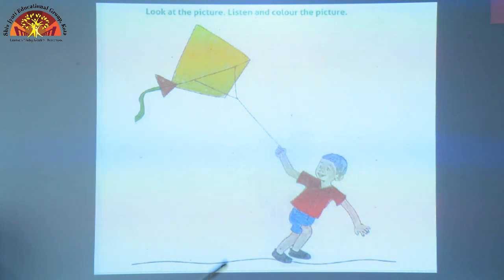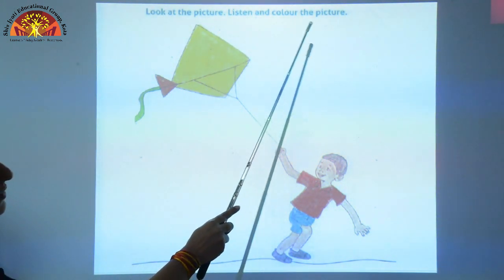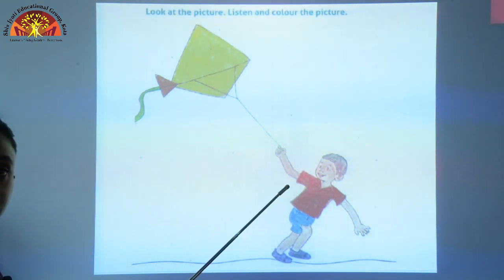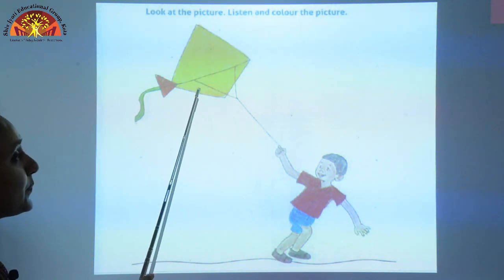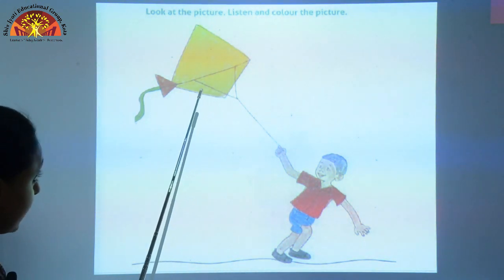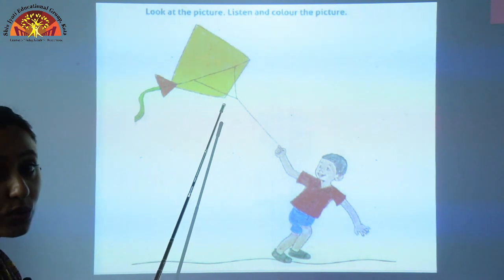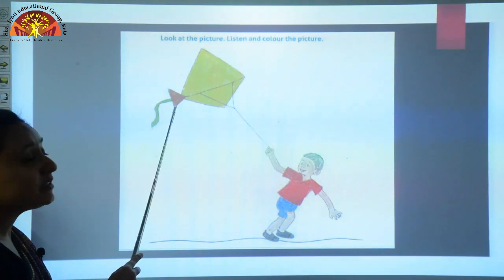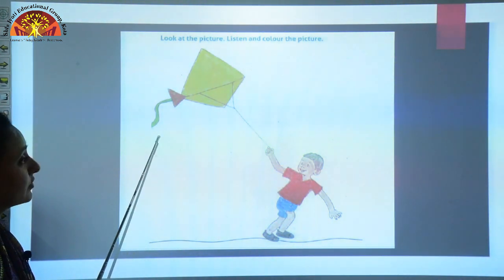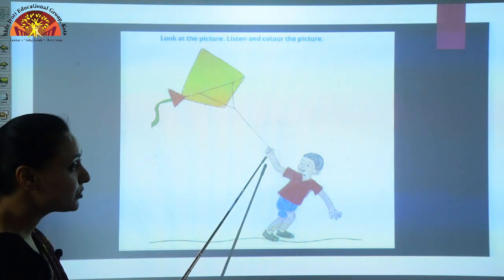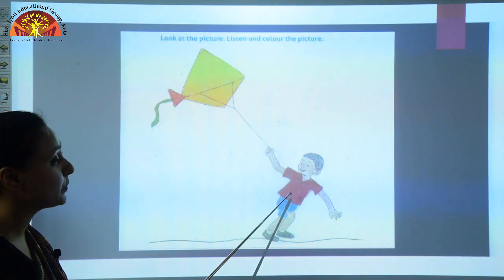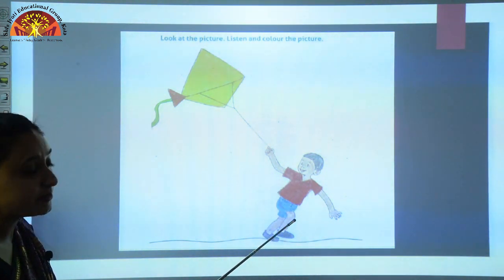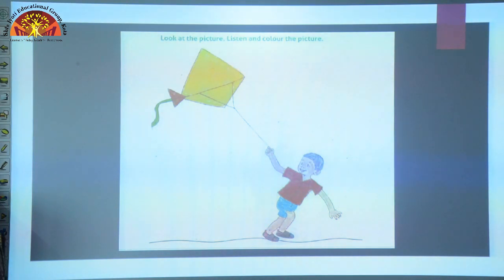Children, look at this picture. Listen and color the picture. You have to listen to me very carefully and fill colors in the picture. The kite is yellow color — fill yellow color in the kite. The tail is of green color. String is attached to it and a boy is flying it. The boy is wearing a red shirt, blue pants, and black shoes. Do it very beautifully.